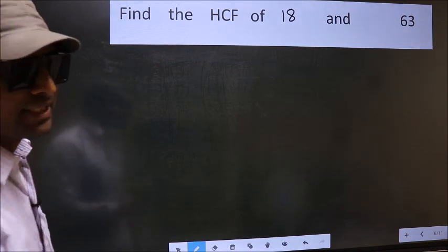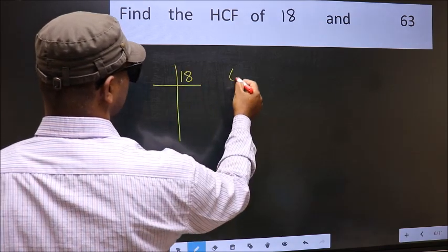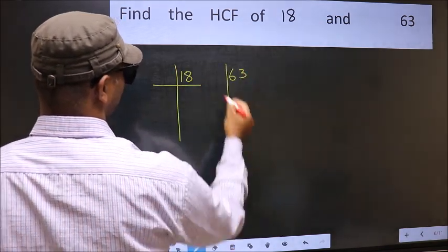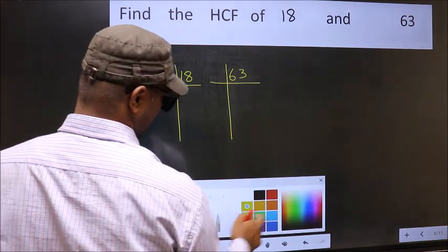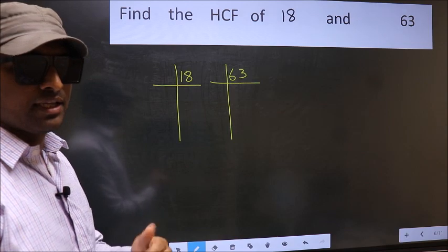What I mean is 18 and 63. This is step 1.